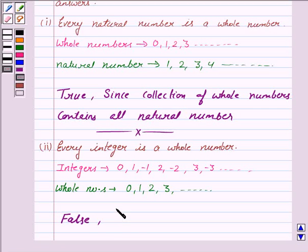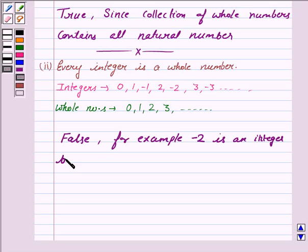For example, minus 2 is an integer but it is not a whole number.